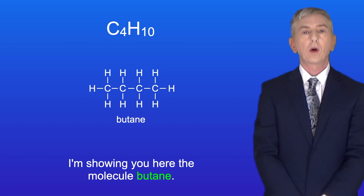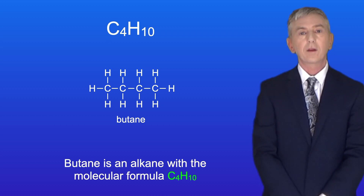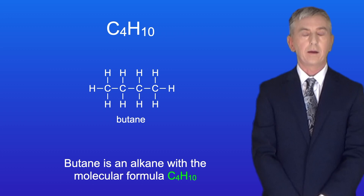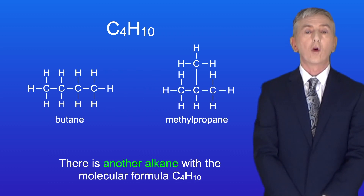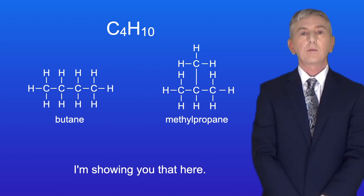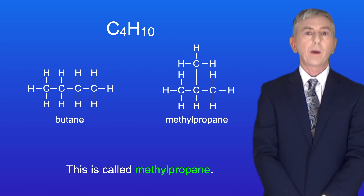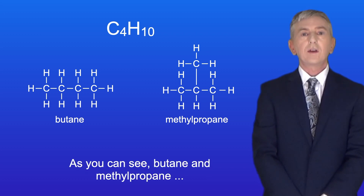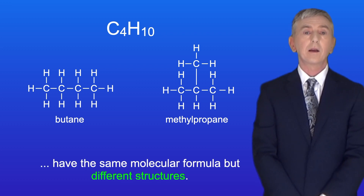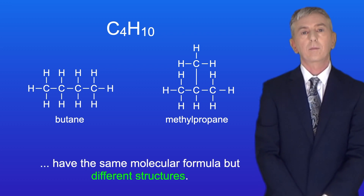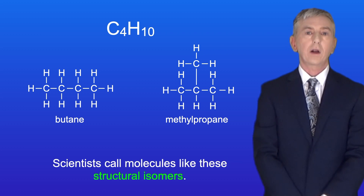Here is the molecule butane, an alkane with the molecular formula C4H10. There is another alkane with the molecular formula C4H10, and that is called methylpropane. As you can see, butane and methylpropane have the same molecular formula but different structures.